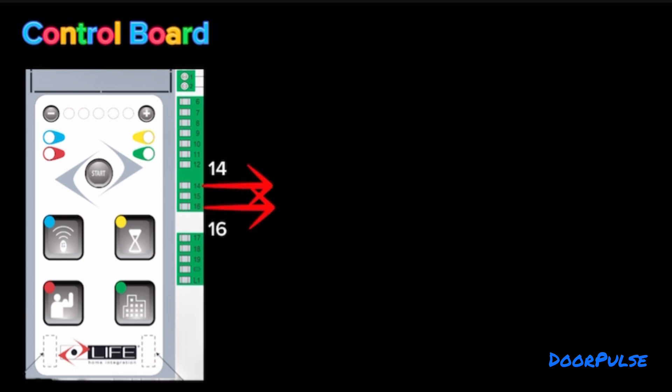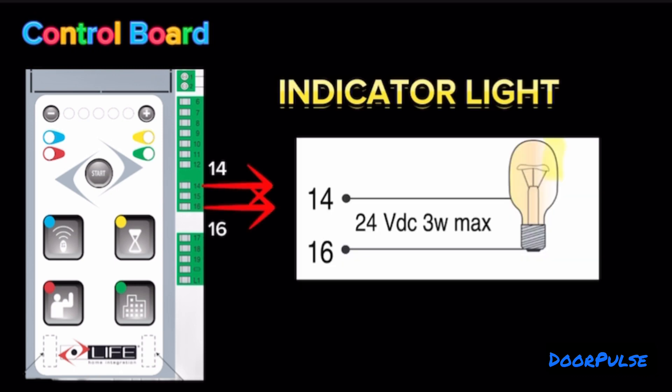Terminals 6 and 14: Indicator Light. 24 Volt DC 3 Watt Max output for connecting an indicator light that copies the function of the flashing light during movement and that remains on when the gate is open.